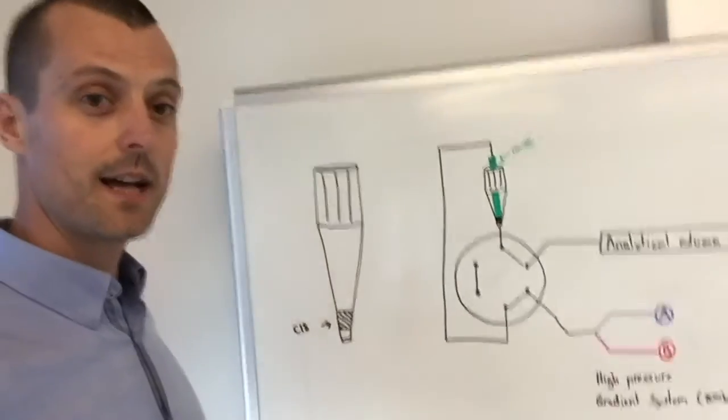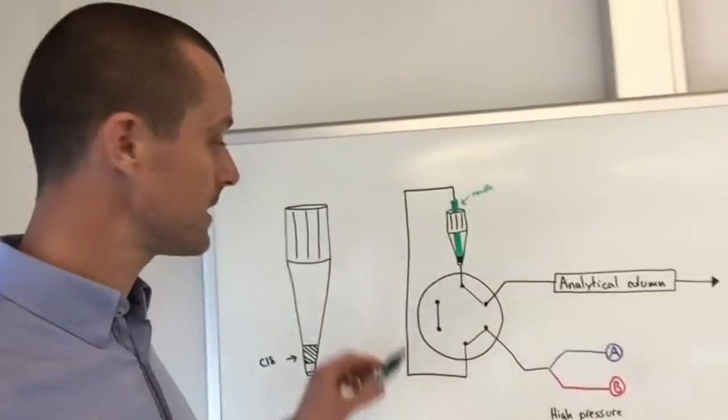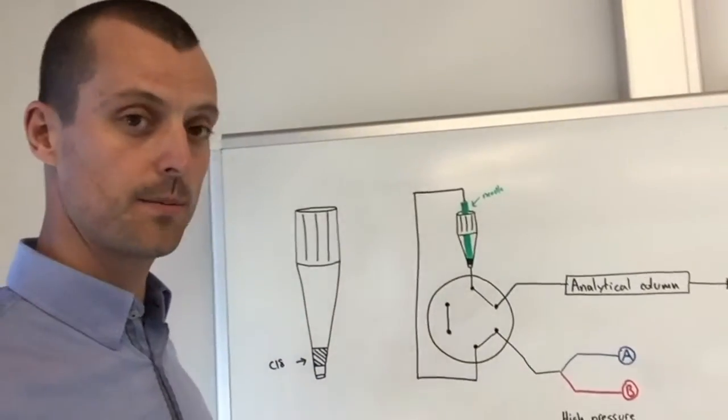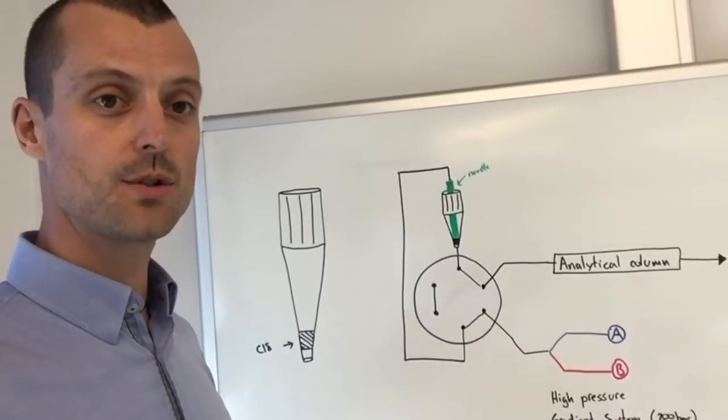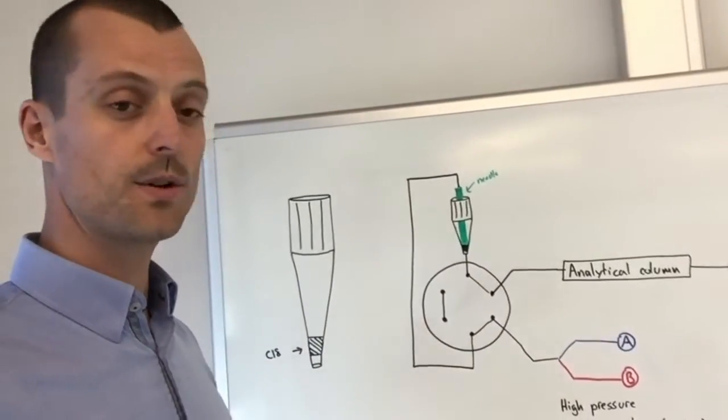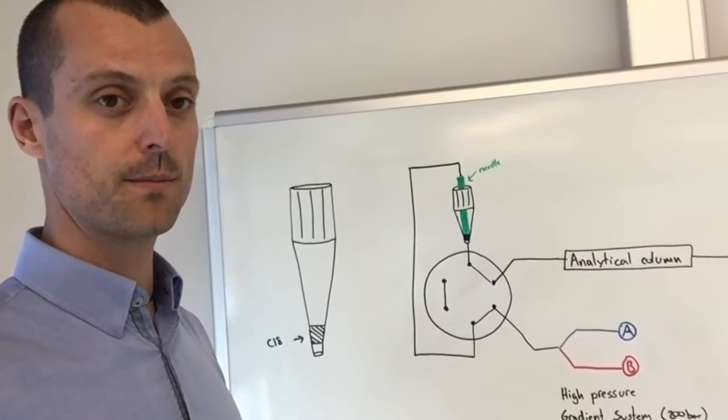The problem, though, is the high pressure limitation of this system. This is really due to the stage tip. And, of course, this means that we can only work with relatively short columns. And, of course, this will affect the final chromatographic performance.